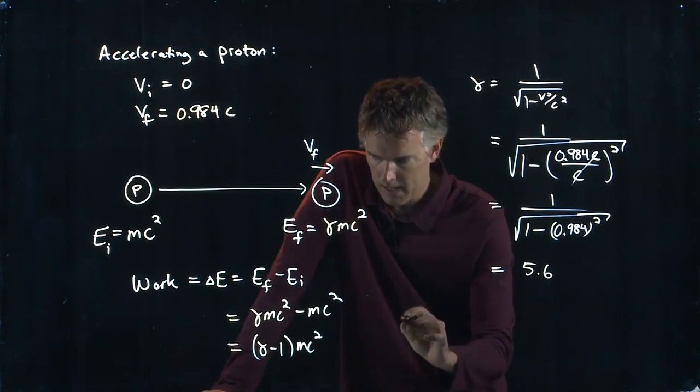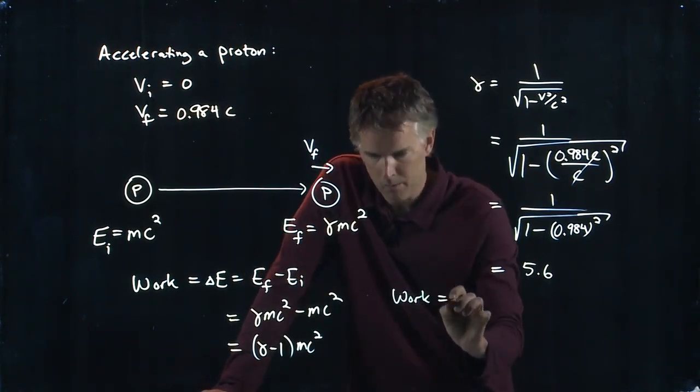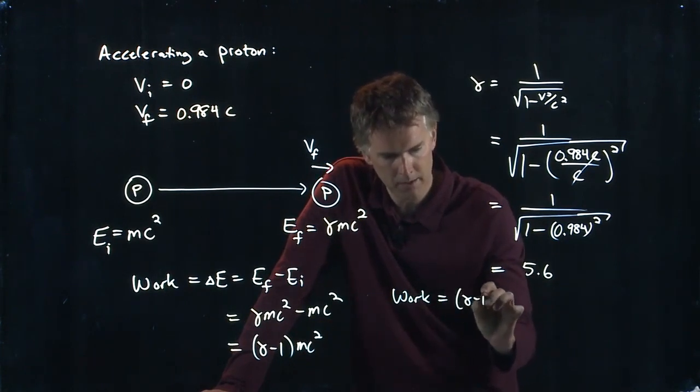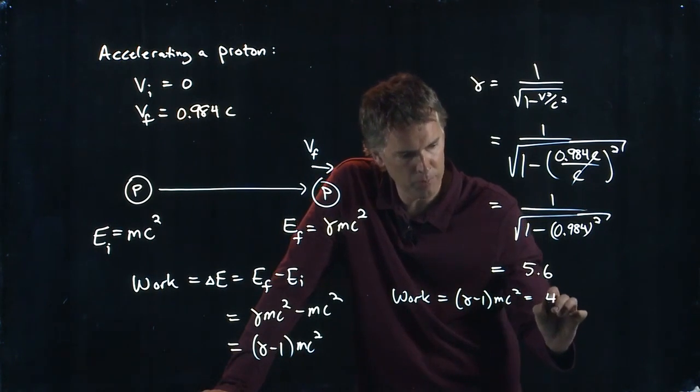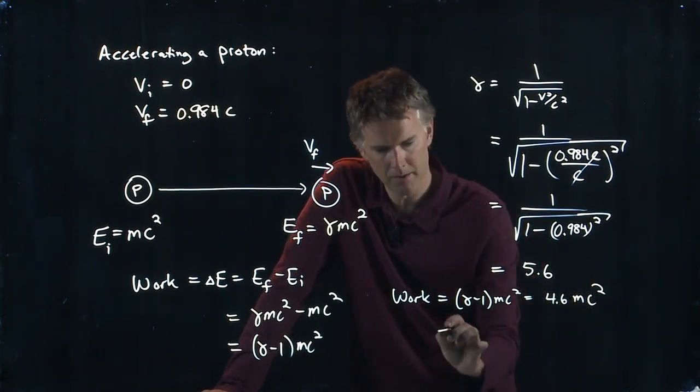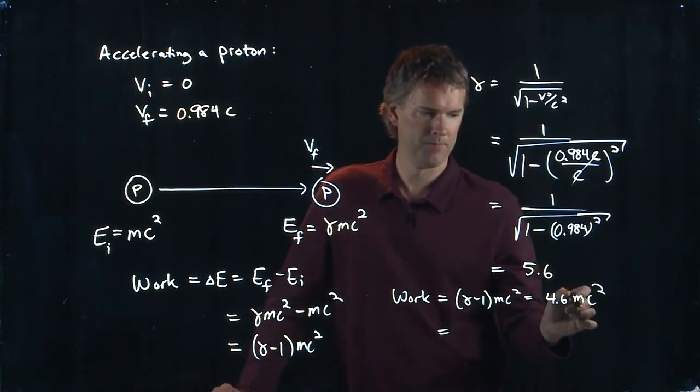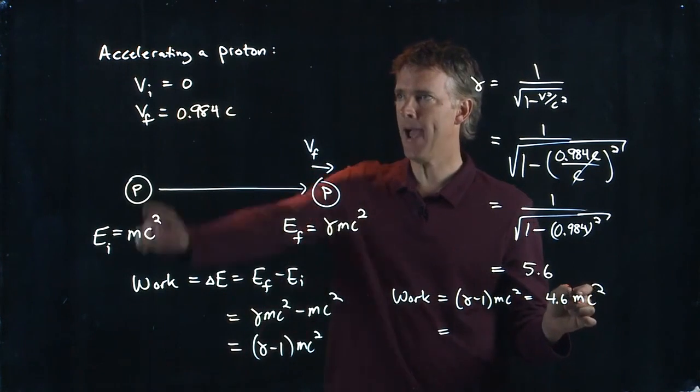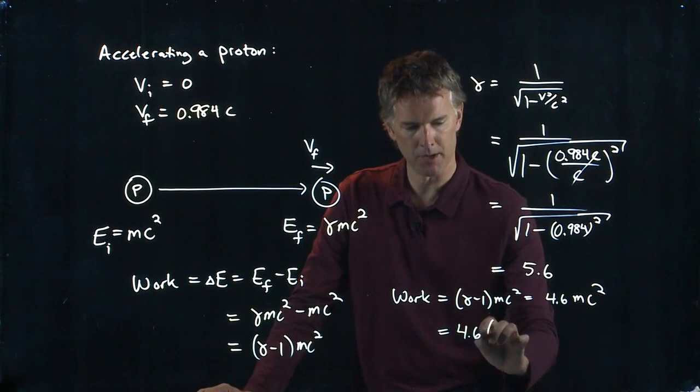So work we said was gamma minus 1 MC squared. And so it's 4.6 times M times C squared. But what is M? M is the mass of a proton. It's the rest mass of a proton.